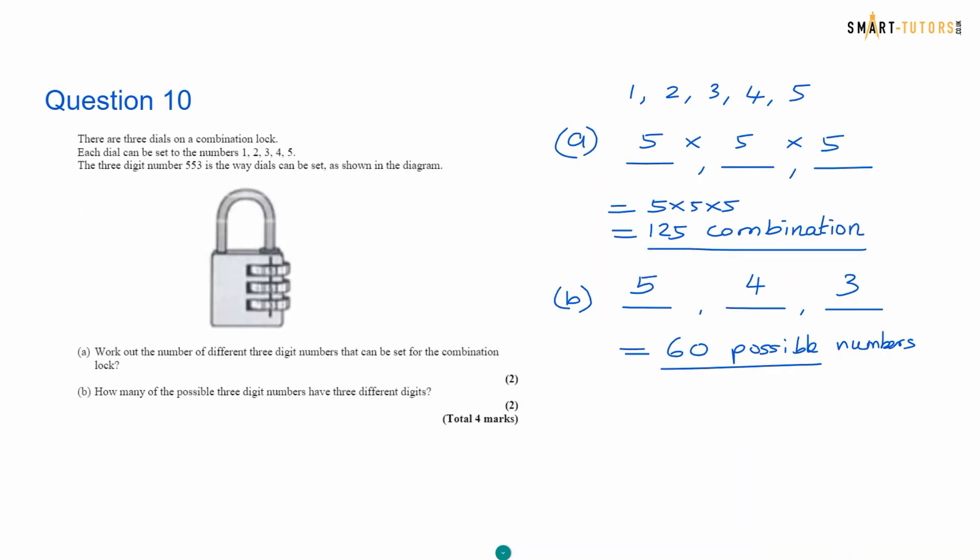Question number 10. It's a permutation combination. There are 3 dials on a combination lock: 1, 2, 3, 4, 5. The 3 digit number 553 is the way dials can be set as shown in the diagram. Work out number of different 3 digit numbers. Different 3 digit numbers means the 2 numbers cannot be same. Completely different can be set for the combination lock. The first digit can be 5 different ways there. Second one also 5 different ways. And third one also 5 different ways. So totally 5 times 5 times 5 is 125 combinations.